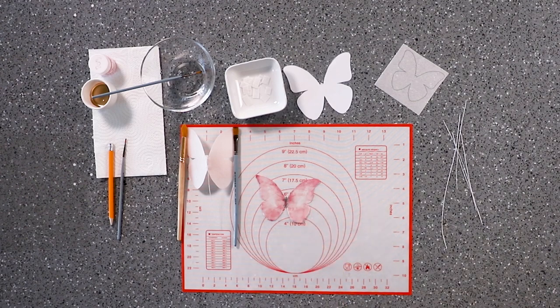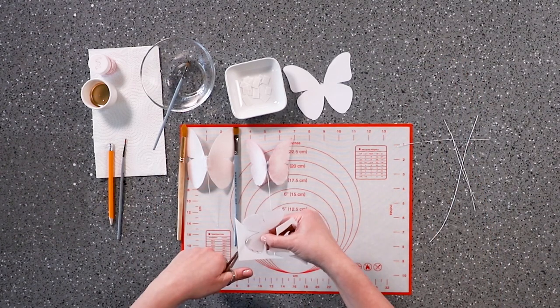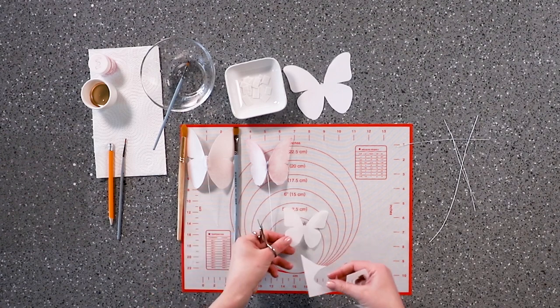You can also make butterflies from white paper. Cut out the butterfly and use petal dust to colour it.